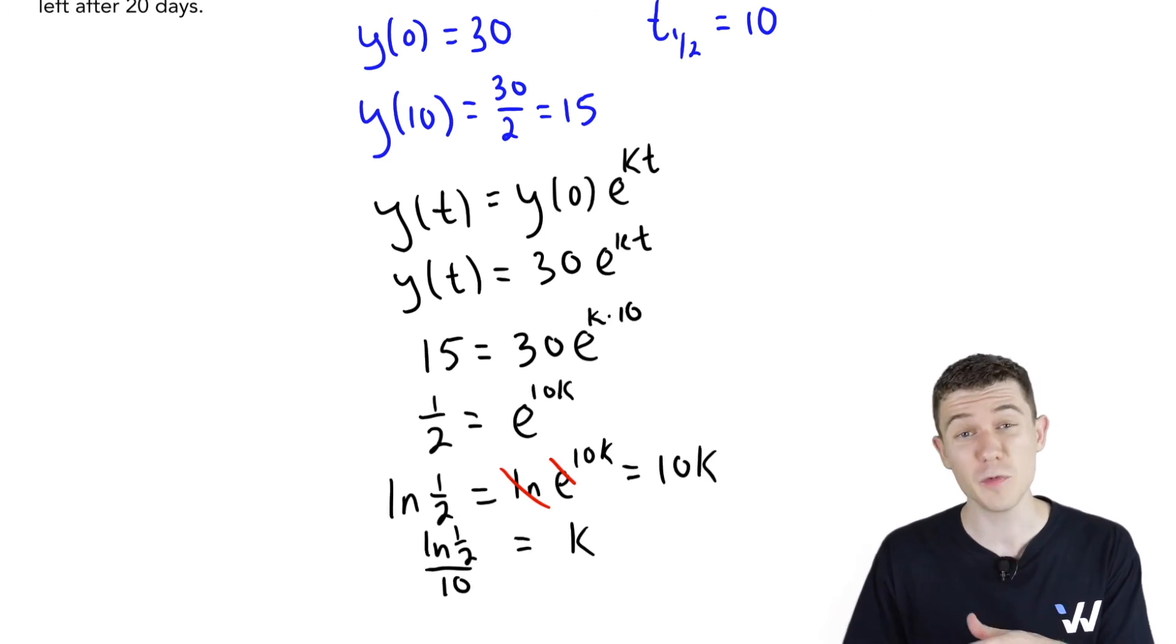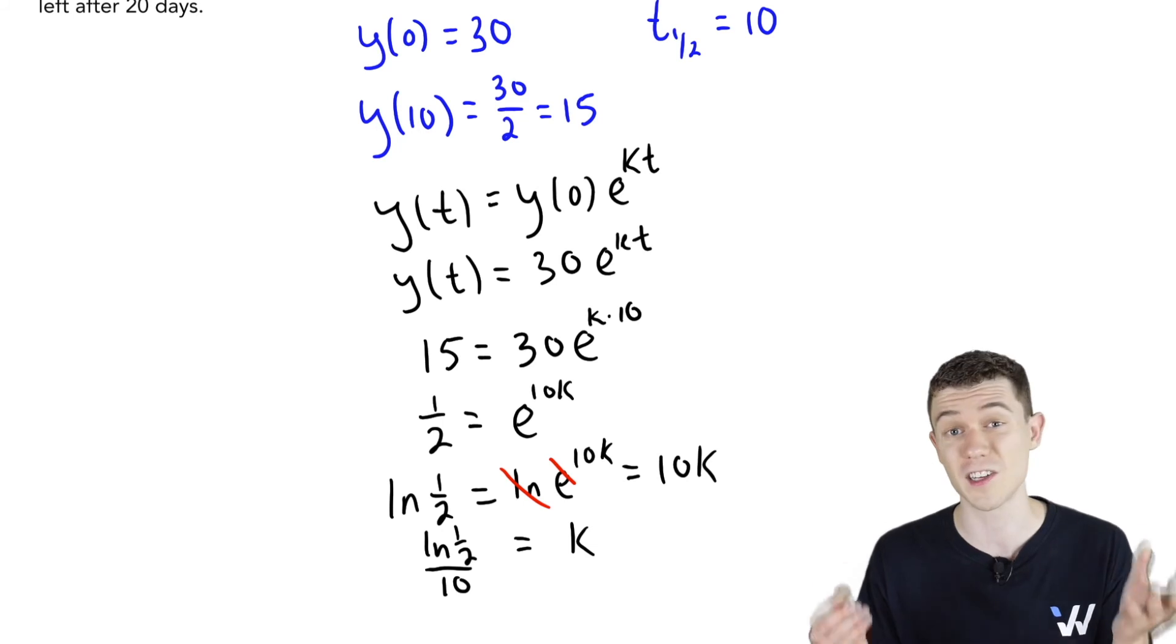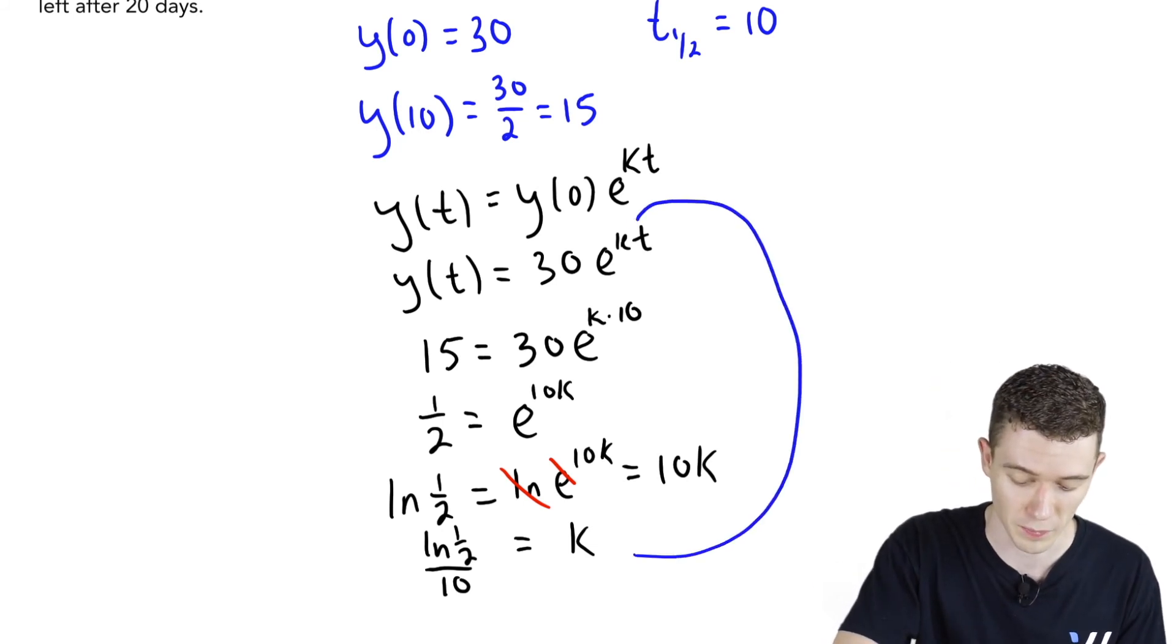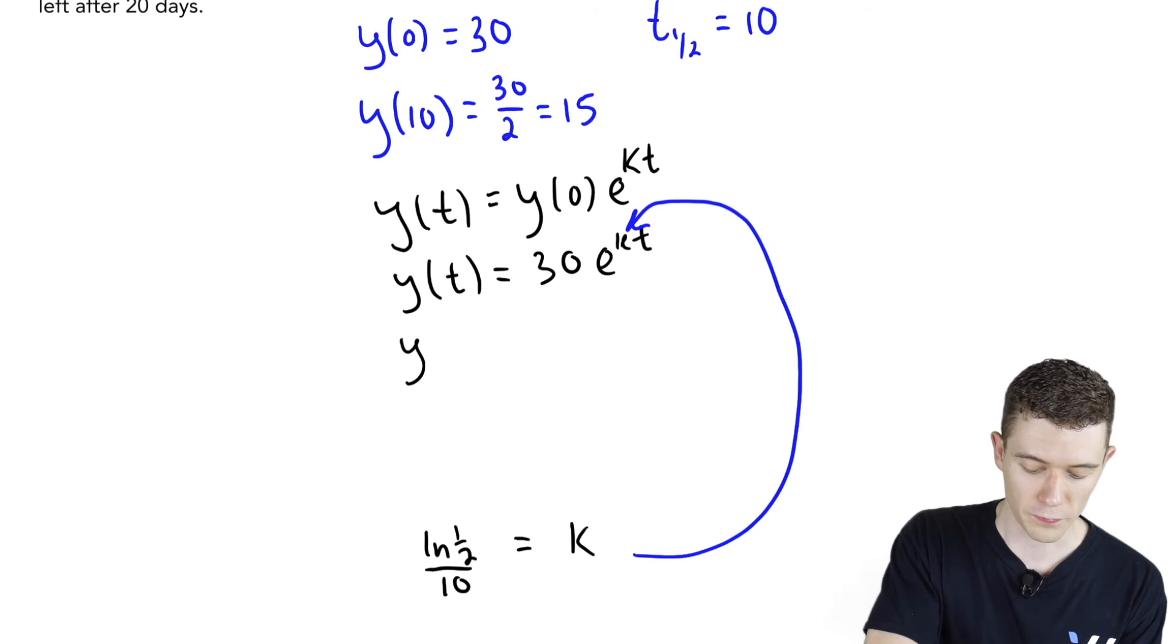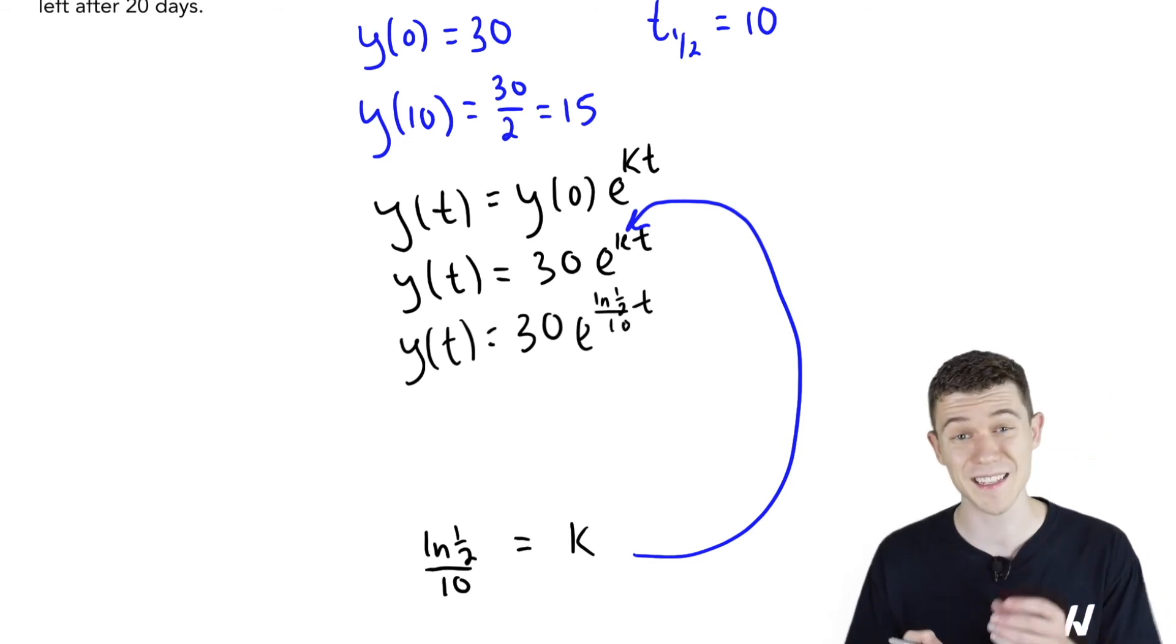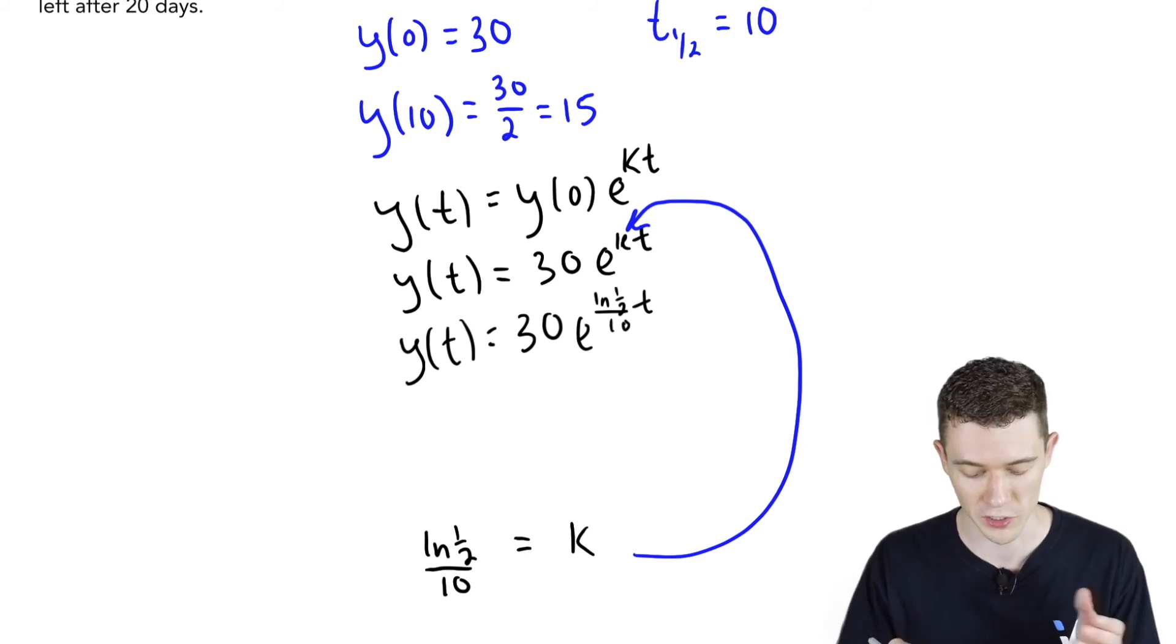Now that we have k, we can plug it back into our function and actually answer the question. We'll take this value and plug it back in. So we get our full y(t) is 30e^(ln(1/2)/10 * t). It's not the nicest equation you've ever seen, but we can answer our question.